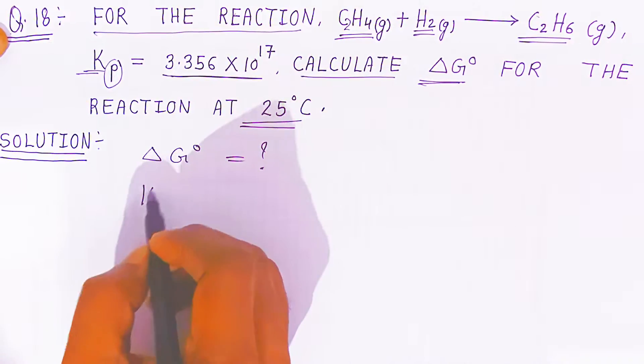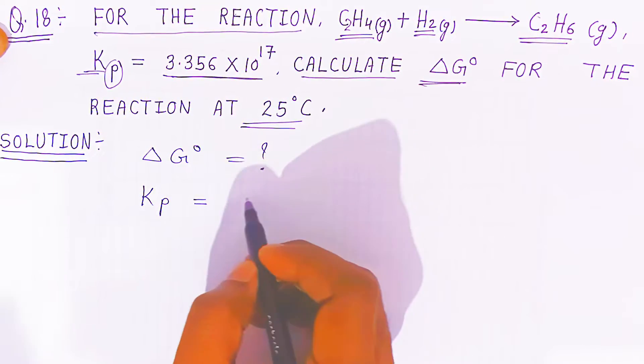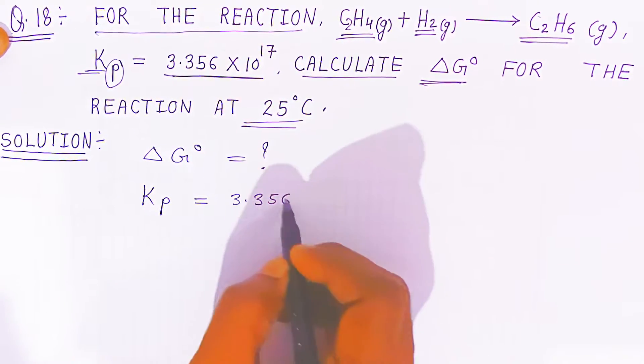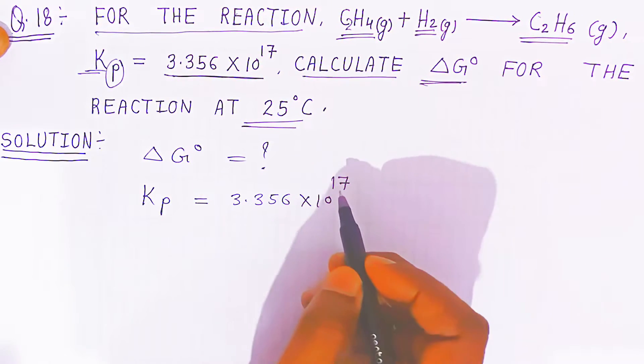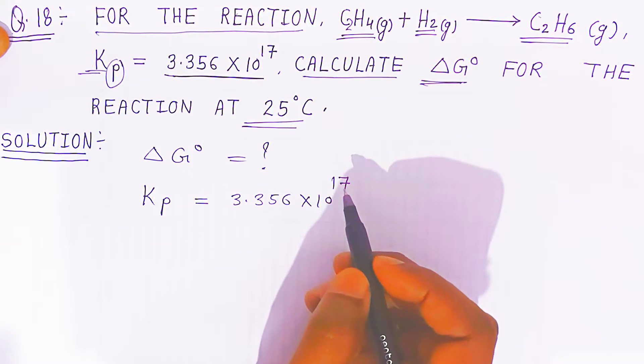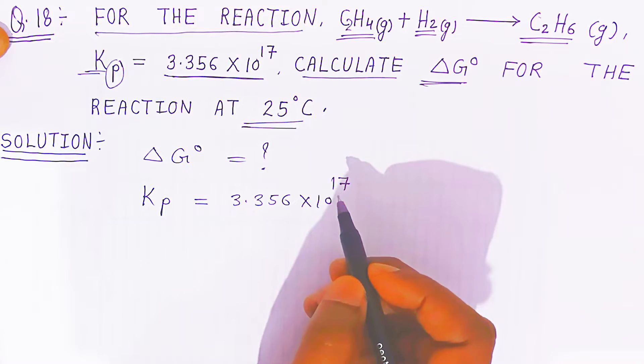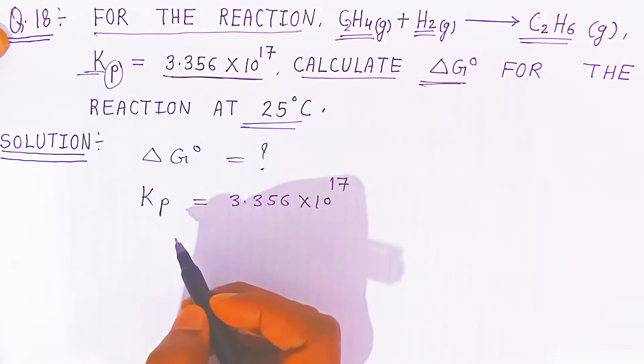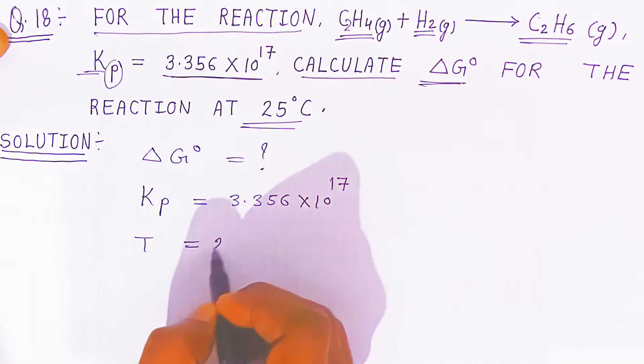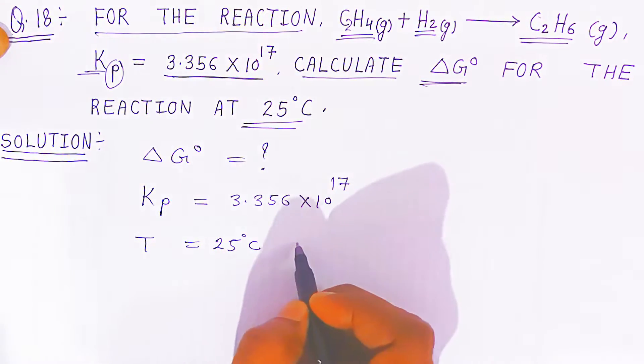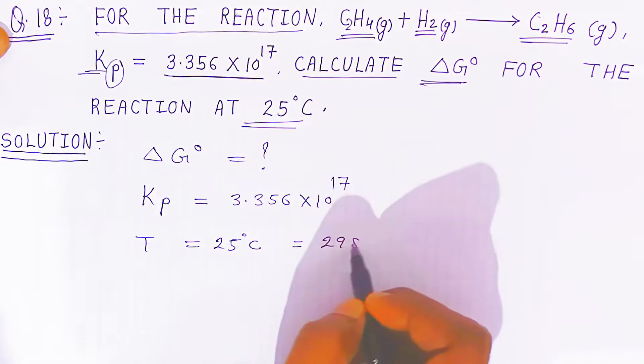If the equilibrium constant is given as 3.356 × 10^-17, and the temperature is given as 25 degrees Celsius, which we are taking as 298 Kelvin.